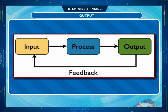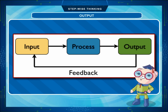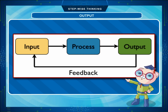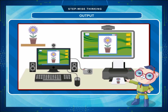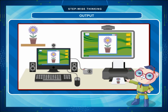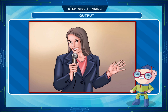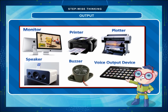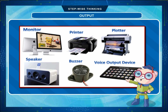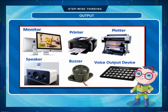Finally, the result is served to the user. This final result is called output. We use different parts for this action. In human beings, we use the mouth to speak and hands to write, while in the case of computers we use printer, monitor, and speakers as output devices.